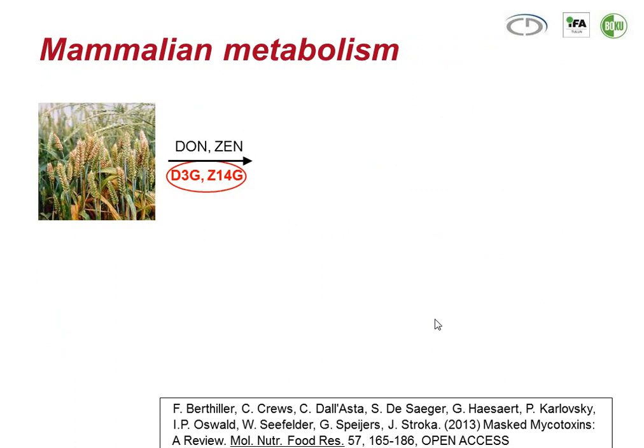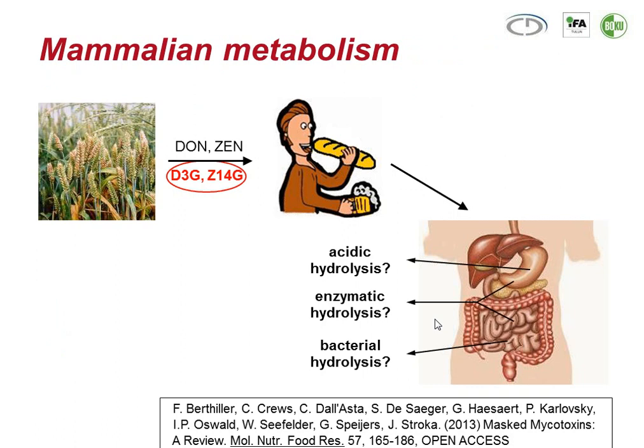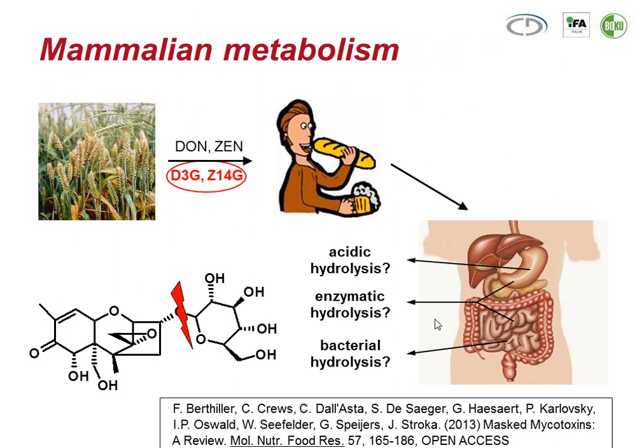Where does the problem come from? Not only are known Fusarium mycotoxins like deoxynivalenol or zearalenone produced and found on the plant, but the plants convert these mycotoxins to the glucosides, which end up in our food. These can potentially be hydrolyzed due to the acidic conditions in our stomach, due to enzymatic hydrolysis in our gut, or even bacterial hydrolysis — all of which could lead to cleavage of the glucose moiety, liberating the native toxin again.